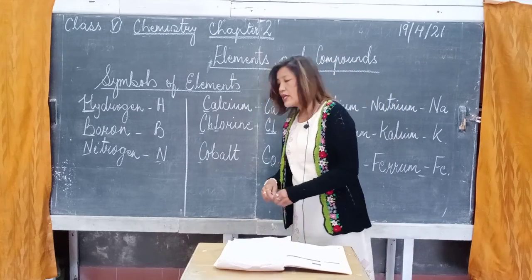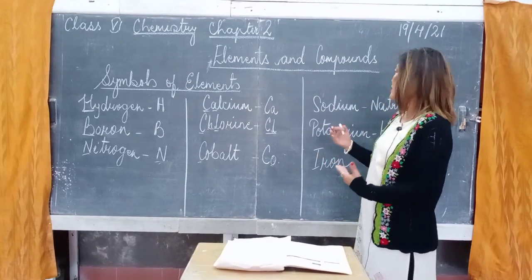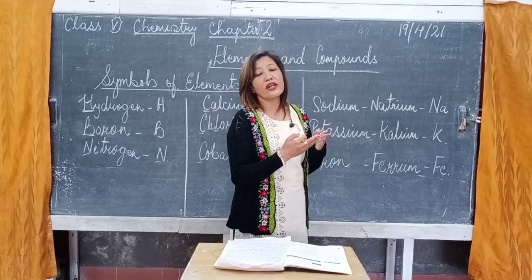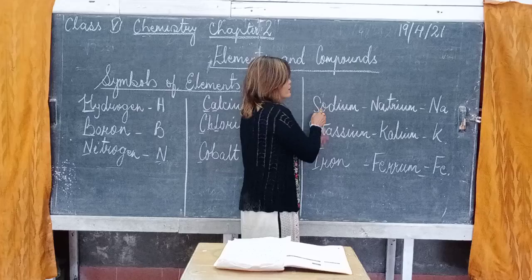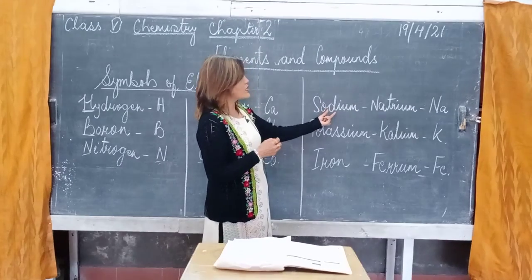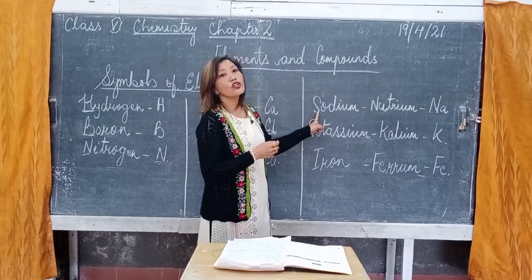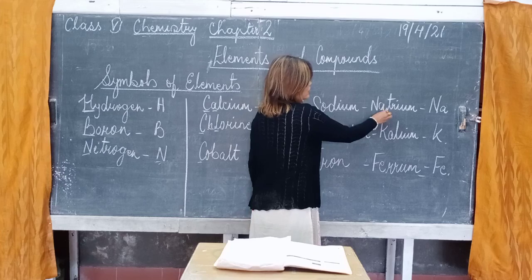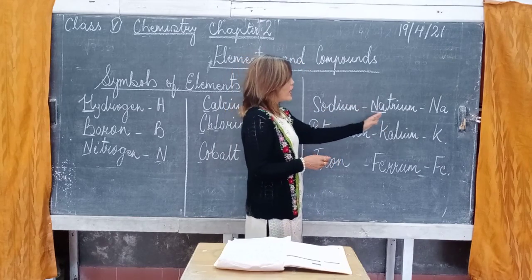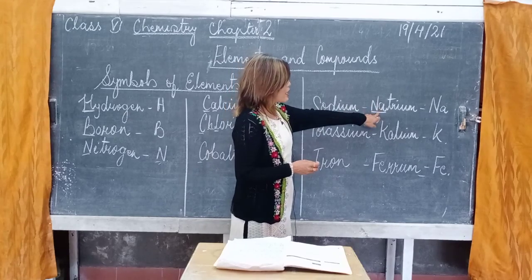Now the third point: in some cases, symbols of elements are derived from their Latin names. For example, sodium is the English name, but it is derived from the Latin name natrium. So when you write the symbol of sodium, you do not write S — instead, you take the first two letters of the Latin name natrium, giving the symbol Na.